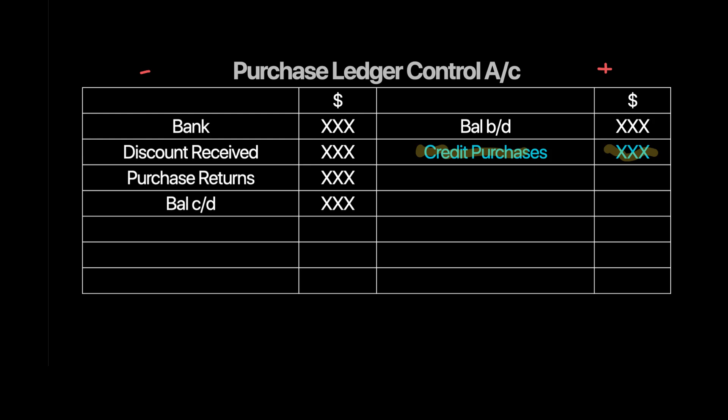So our use of control accounts is applied here — we calculate credit sales through the sales ledger control account and credit purchases through the purchase ledger control account.